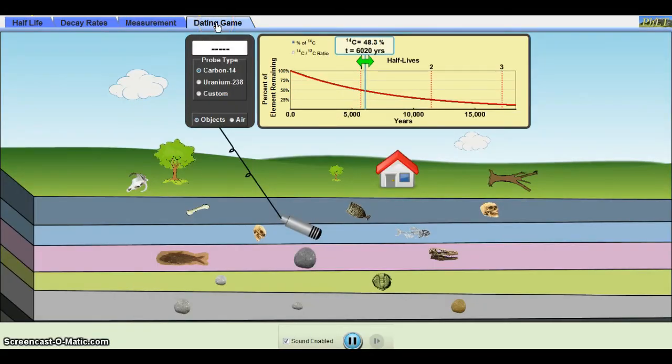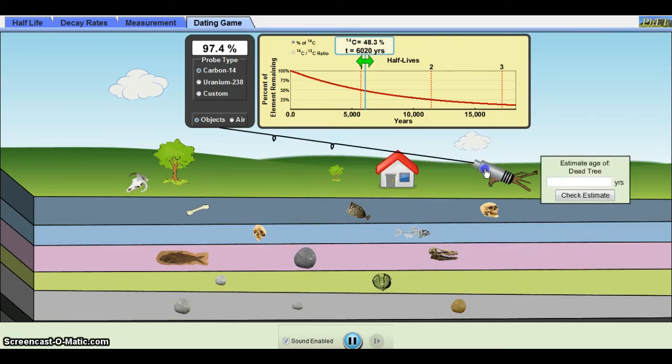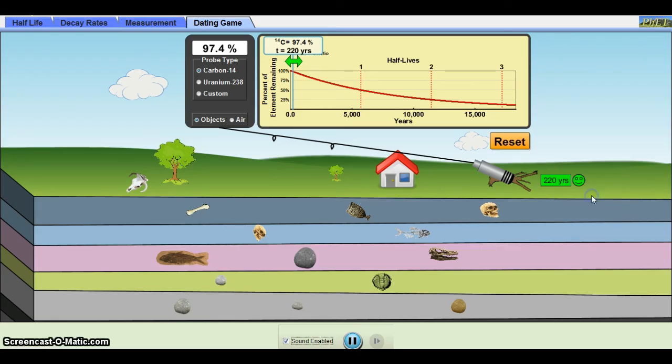The dating game section is the application of the concepts. This is how it works. I am going to drag the probe to the dead tree. It tells me that there is 97.4% of carbon-14 remaining. Students drag the arrows until they match the percentage and type the estimated time in the box. Then they click the check estimate and the program tells them whether they are correct or not.